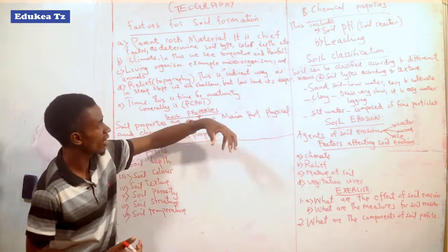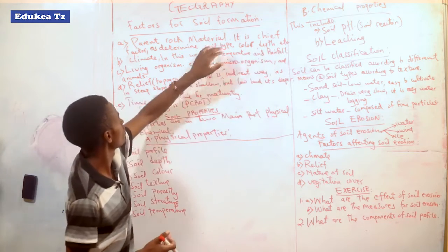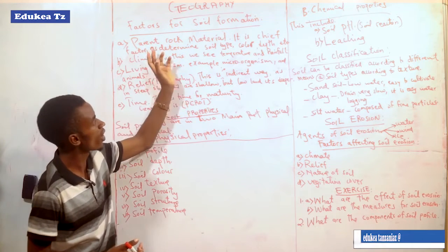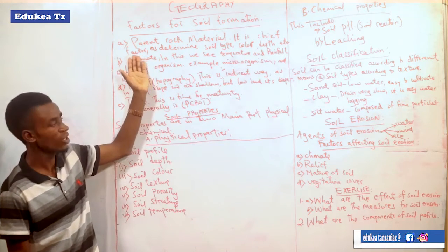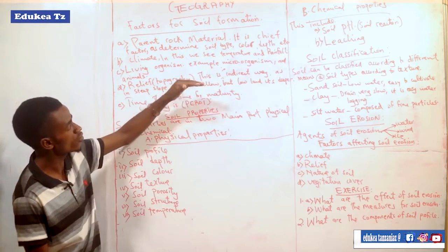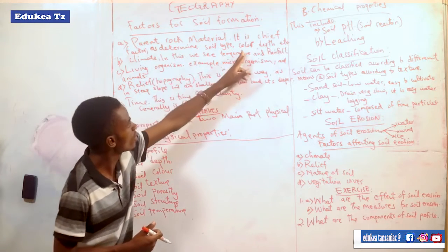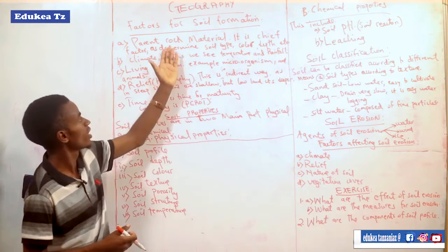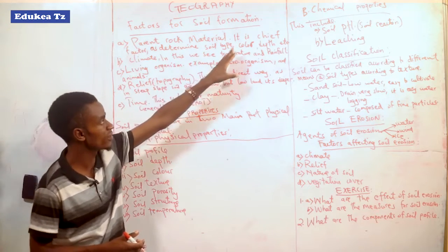Soil density means the degree of deepness of the soil. This is all determined by the parent rock. That is why we say it is the chief factor. The soil being a certain type depends on the parent rock. The soil being a certain color depends on the parent rock. Also the depth of the soil depends on the parent rock. This is the first factor for soil formation.